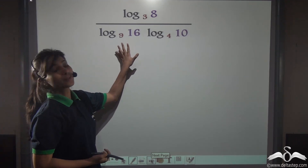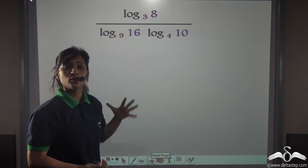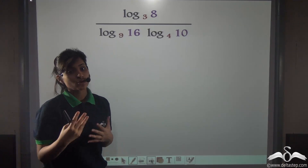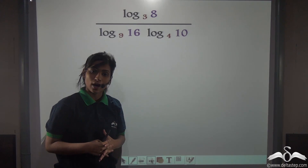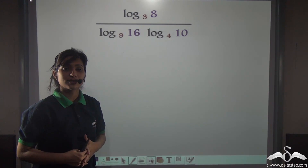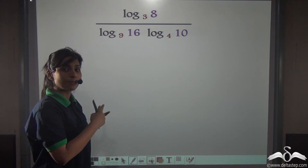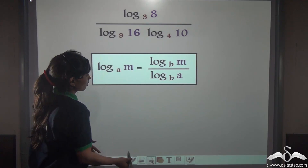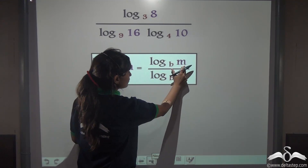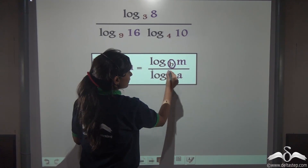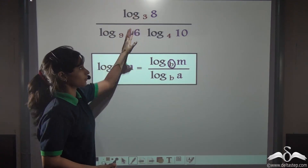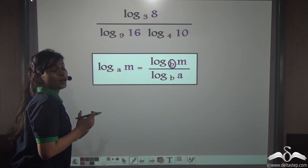Now we have been given a sum. In these kinds of operations in logarithms, you will use base changing formulas when all the bases are not the same. When you have the same bases, you can easily calculate the sums. But here all the bases are different. We will use the base changing formula here, where log M to the base A is equal to log M to the base B by log A to the base B. First let us change the numerator: log 3 to the base 8.